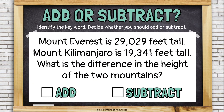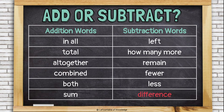Mount Everest is 29,029 feet tall. Mount Kilimanjaro is 19,341 feet tall. What is the difference in height of the two mountains? 'Difference' means subtract — a difference is what you call the answer to a subtraction problem.